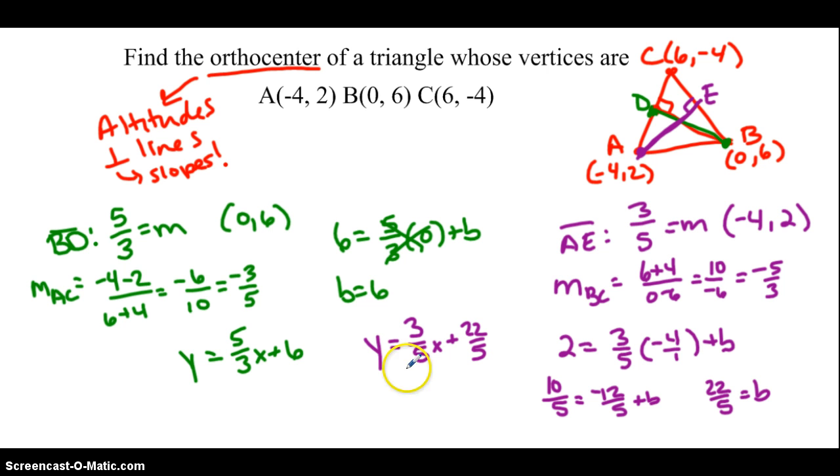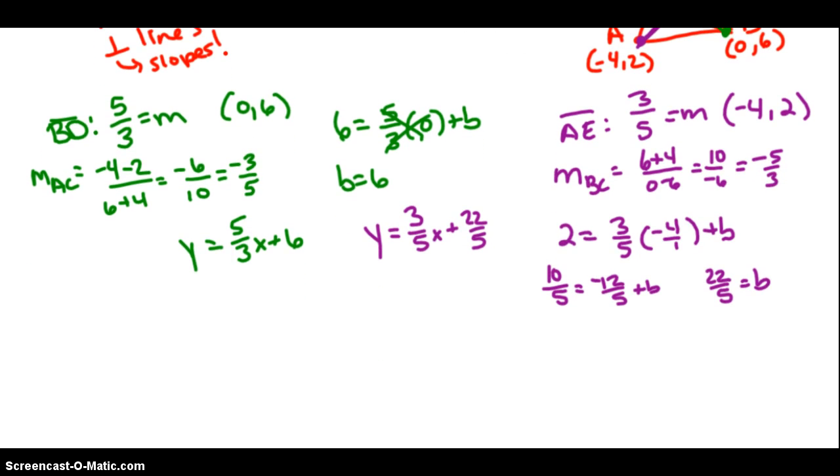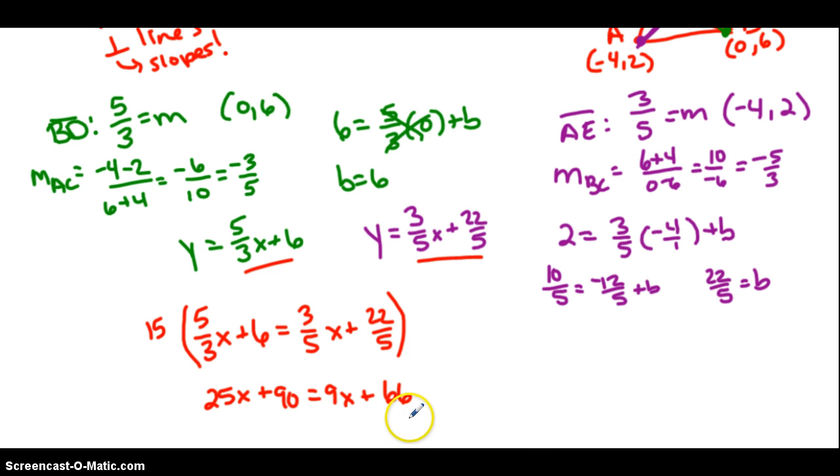Now to find the orthocenter, we're looking at the intersection of those two altitudes. So if I want the intersection of those two altitudes, we're solving a system here. So to solve this system that they're both set equal to Y already, I'm just going to set them equal, these expressions equal to each other. So we're going to get 5 thirds X plus 6 equals 3 fifths X plus 22 fifths. And I know we don't like dealing with fractions, so I'm going to eliminate the fraction by multiplying everything by the common denominator of 15. So if I distribute 15 into each term, this would become 25X plus 90. And then here, this would become 9X plus 66. Now let's solve.